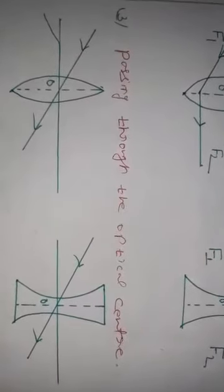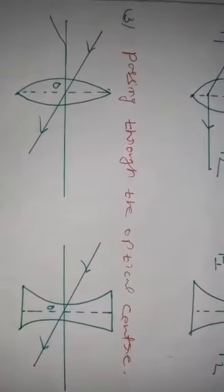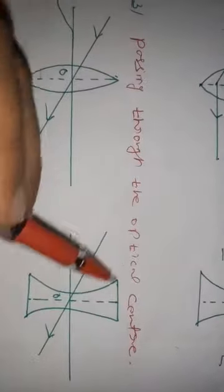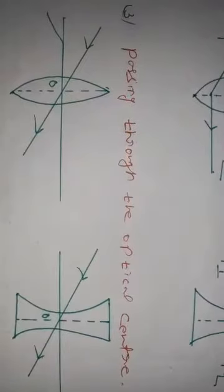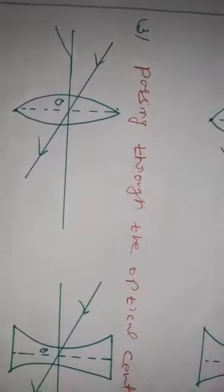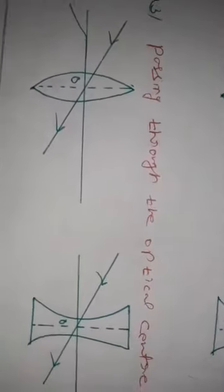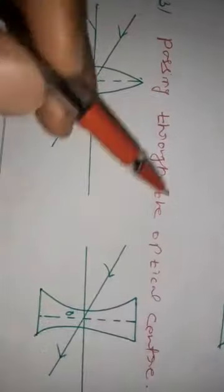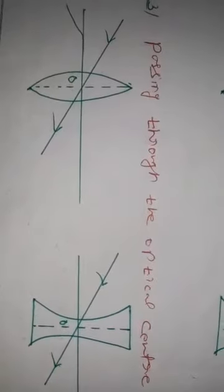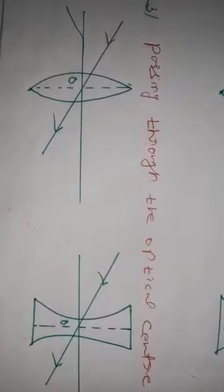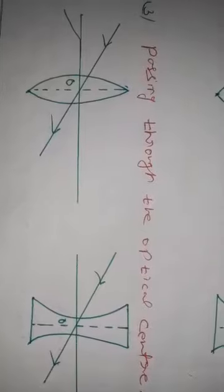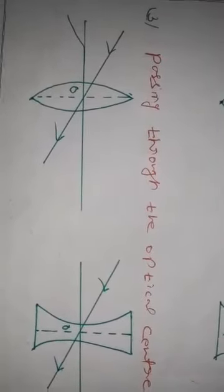The third rule: a ray passing through the optical center — or directed to the optical center — will emerge out undeviated. There is no deviation for a ray passing through the optical center in the case of both convex and concave lenses. These are the rules for image formation through a lens.